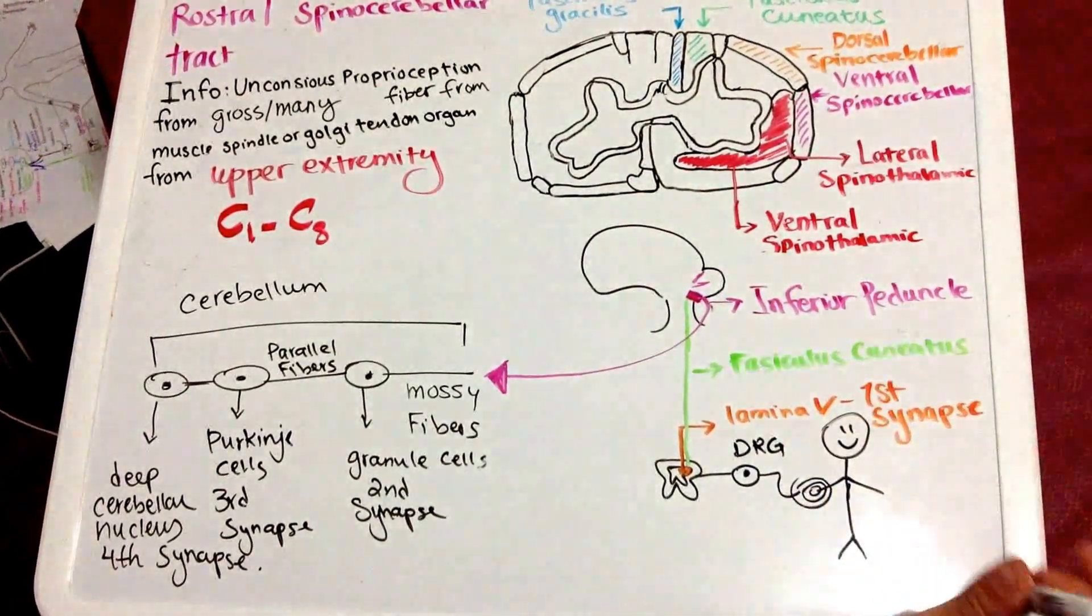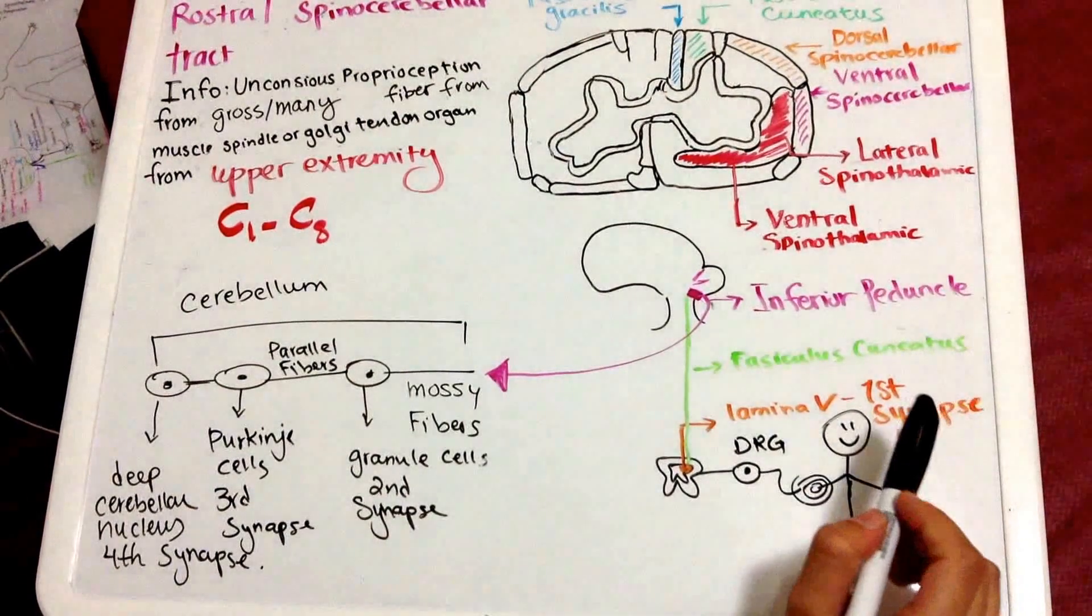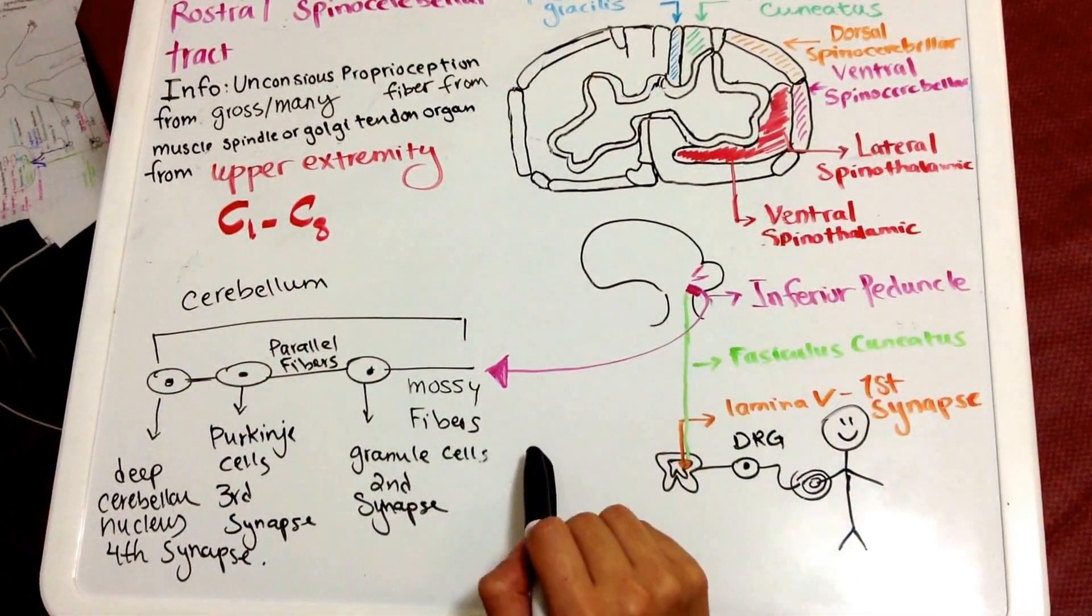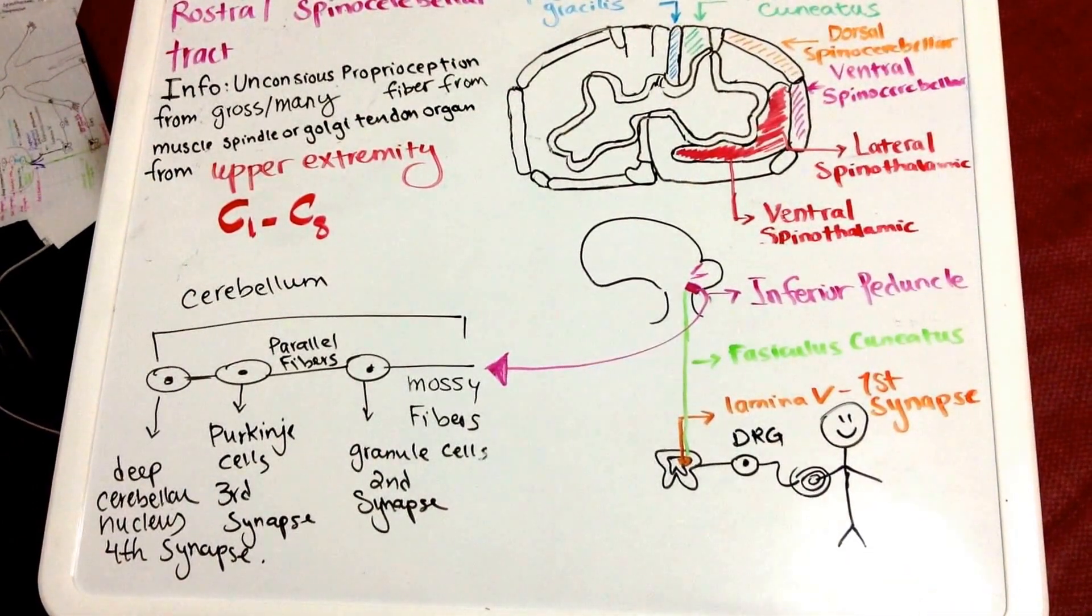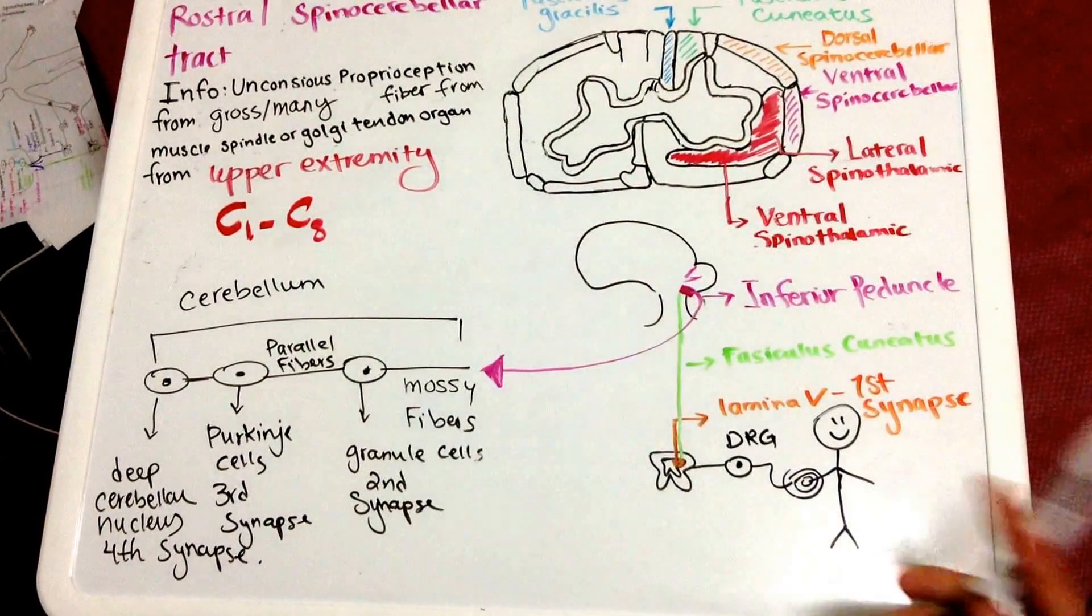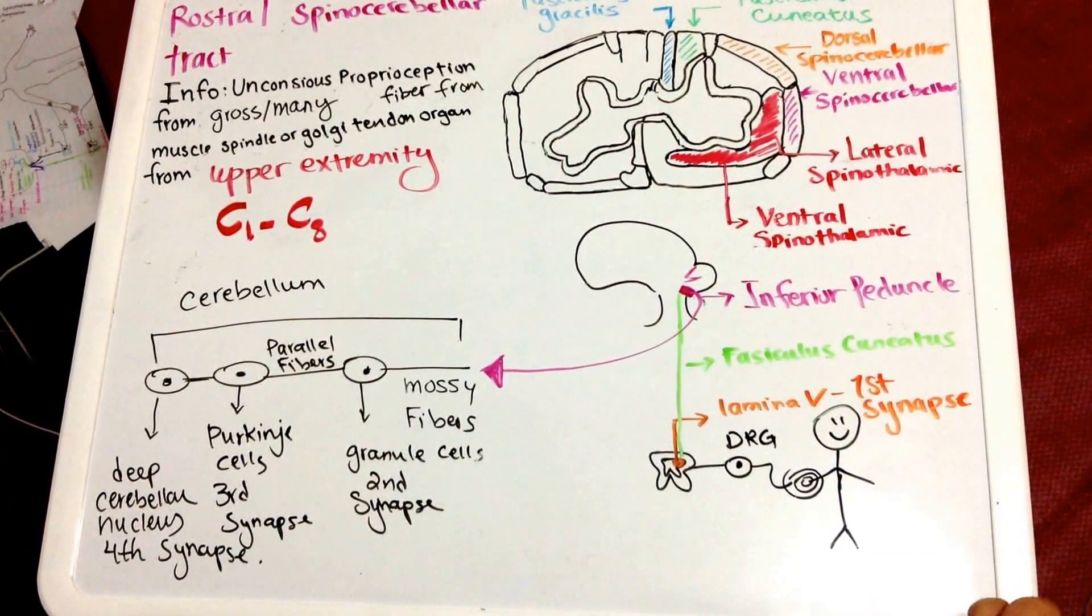From this point on everything is happening in cerebellum again because this information is unconscious proprioception it does not need to go to your cortex, it is just processed in the cerebellum.